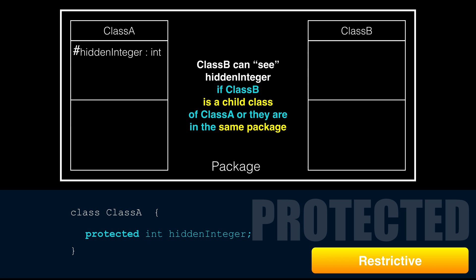The last access modifier is a bit tricky to understand at this point. It's called Protected. There's a concept called Inheritance where classes can be related to each other. Protected says classes must be related to see the method or attributes, or be in the same package.